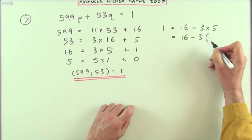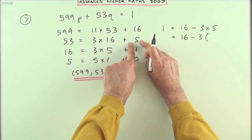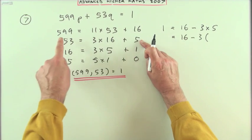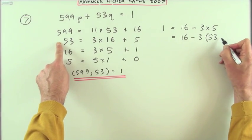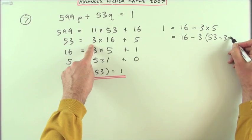So that'll be 16 take away, now jumping up to 5, whatever 5 produced, that'll be 53 minus 3 times 16.